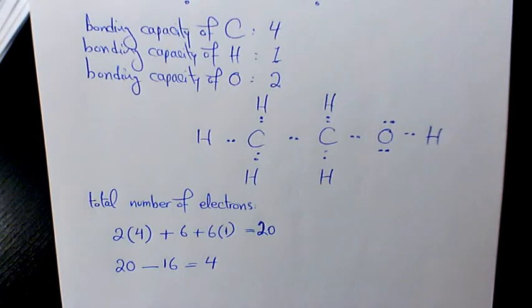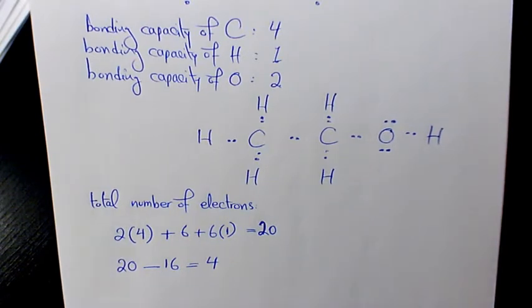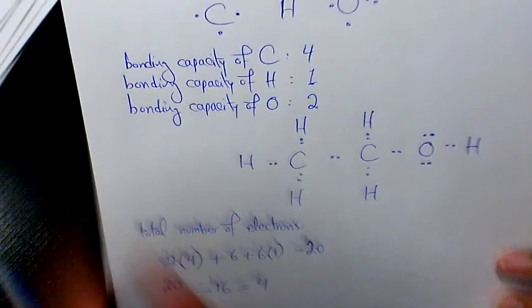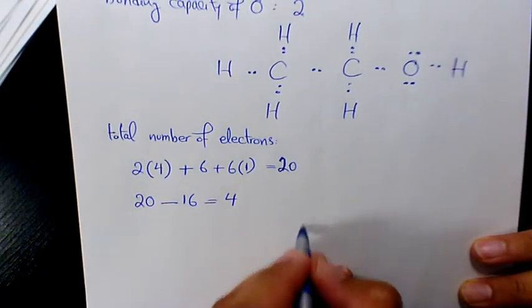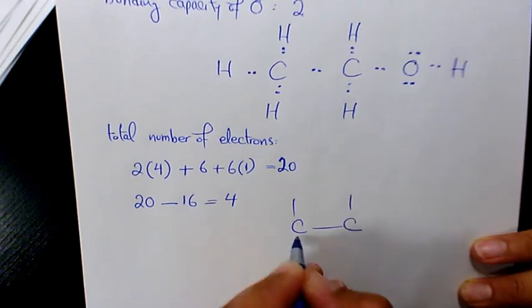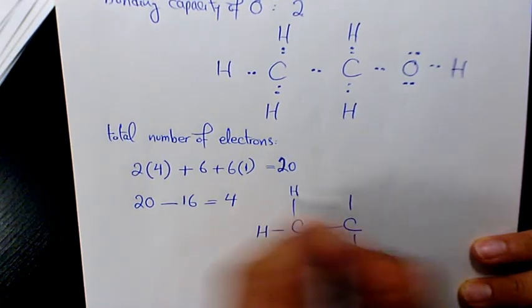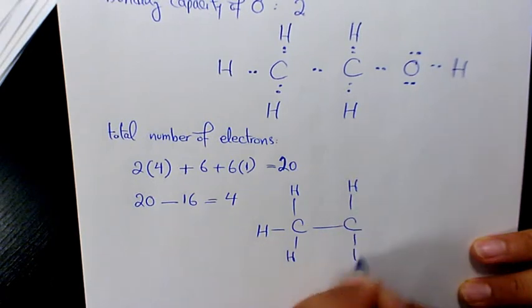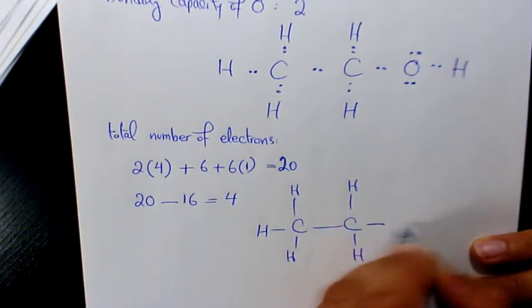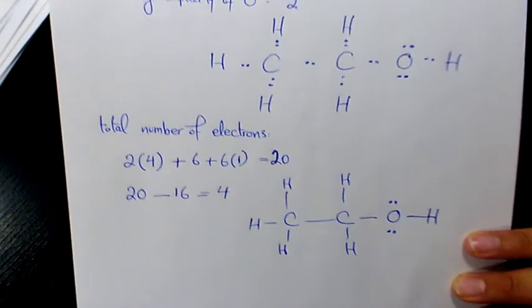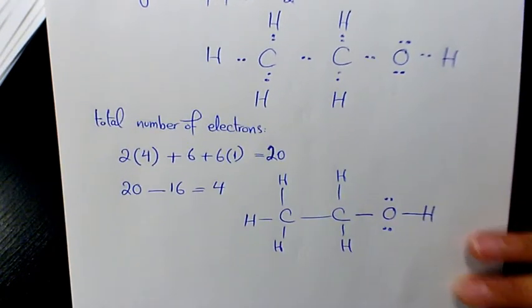So now oxygen follows the octet rule as well. To complete this Lewis structure: we have C, C, H, H, H, H, H, H, O with lone pairs, and H at the end.